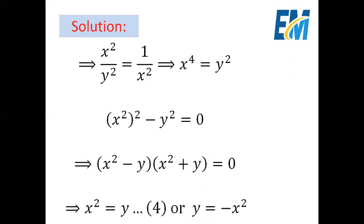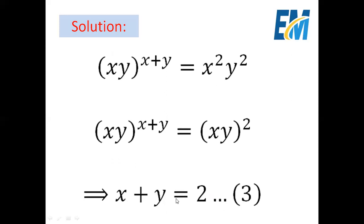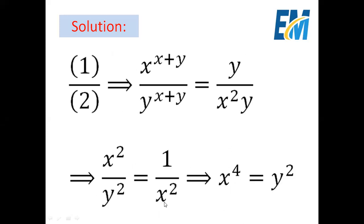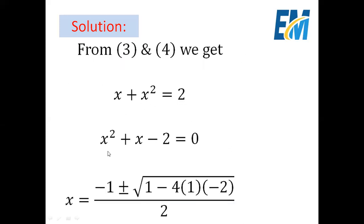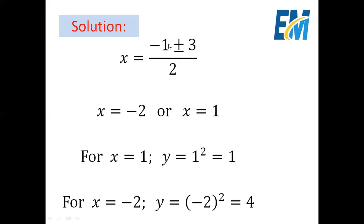First, let us use the third equation and the fourth equation. The fourth equation is x squared equals y. Substituting into the third equation x plus y equals two, we replace y with x squared to get x plus x squared equals two. This gives x squared plus x minus two equals zero. Solving with the quadratic formula: x equals minus one plus or minus the square root of (1 minus 4 times 1 times negative 2), all over two. After simplification, x equals minus one plus or minus three, all over two. So the first root is (minus one minus three) over two, which is minus two, and the second root is (minus one plus three) over two, which is one.